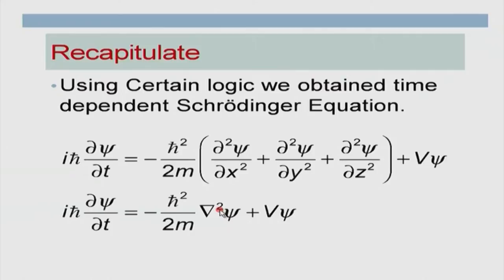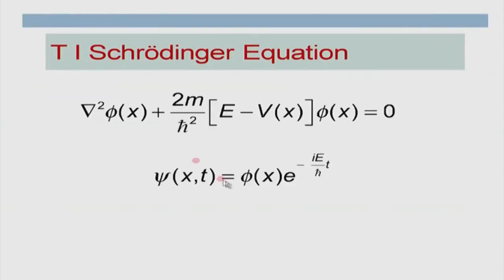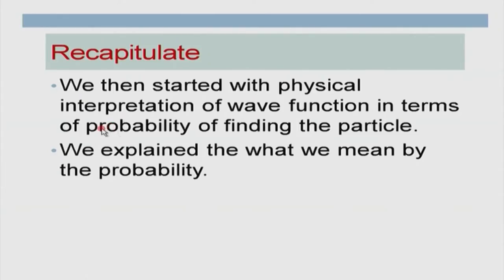Now let us come to the actual lecture. Let us recapitulate what we did last time. Using certain logic, we obtained the time-dependent Schrödinger equation in three dimensions. This whole operator can be written in terms of ∇²ψ. The advantage is that ∇² can be expressed in Cartesian, spherical polar, or cylindrical coordinates as needed. For the case when V has no explicit time dependence, we can separate variables to obtain the time-independent Schrödinger equation. The actual wave function ψ(x,t) is the solution φ(x) multiplied by e^(−iEt/ℏ), which comes from the time-dependent part of the Schrödinger equation.